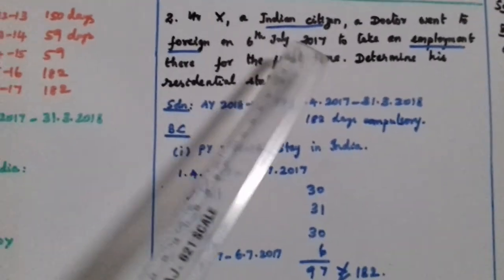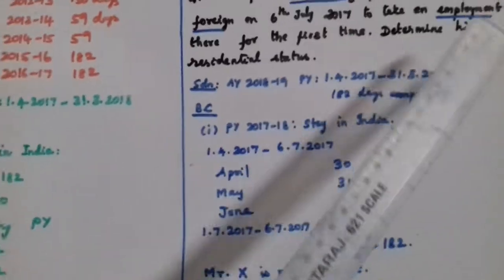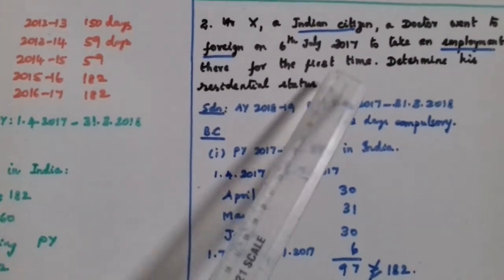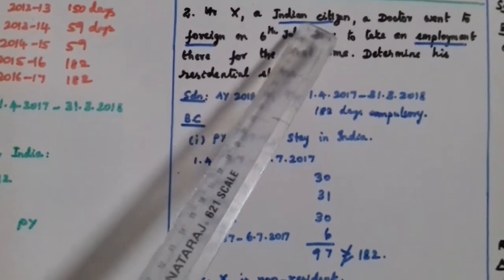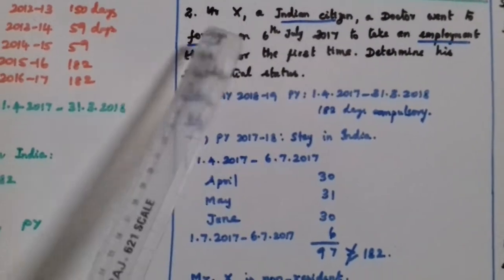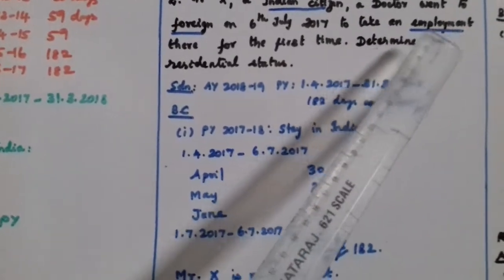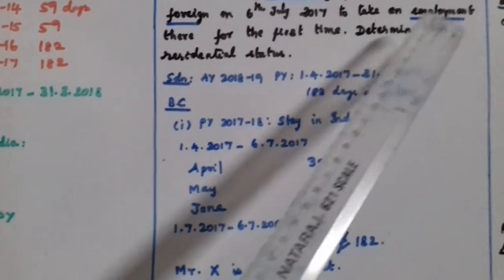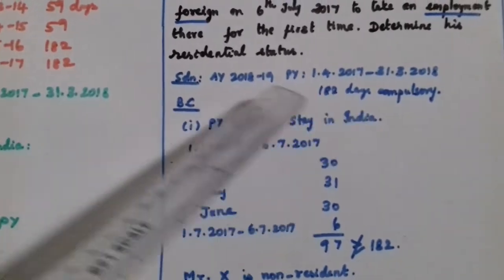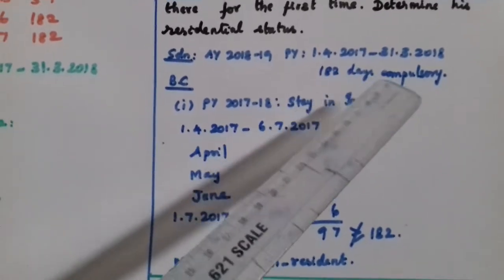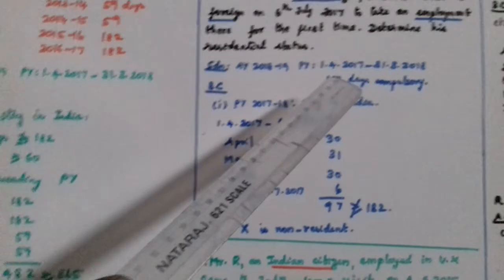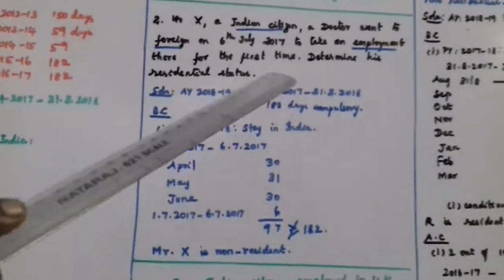Next problem: Mr. X is an Indian citizen, a doctor who went abroad on 6th July 2017 to take up employment there for the first time. Determine his residential status. This is an exceptional case — an Indian citizen going to a foreign country for employment. In this case, 182 days is compulsory; the 60-day condition does not apply.